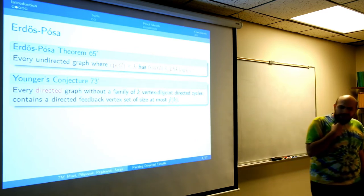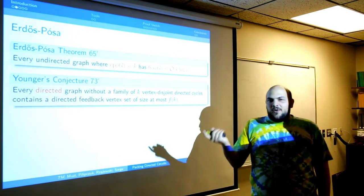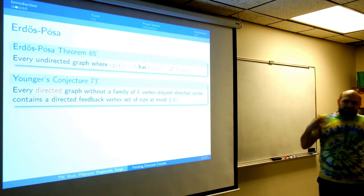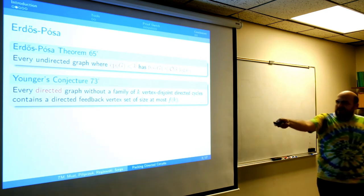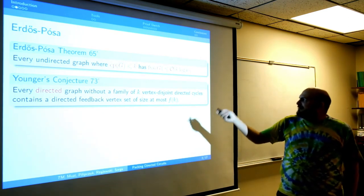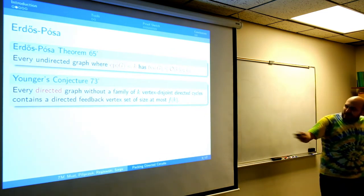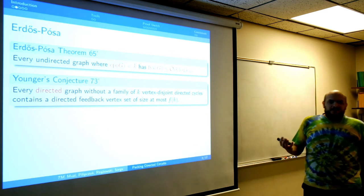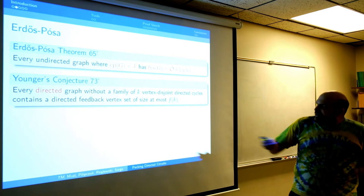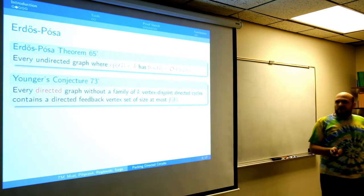A couple of years later, Younger thought that a similar relation might exist not only in classical graphs but also in the directed setting. He conjectured that there is some function — not necessarily as nice as k log k — such that if your graph doesn't contain k vertex-disjoint directed cycles, its directed feedback vertex set should be bounded by some function of k.